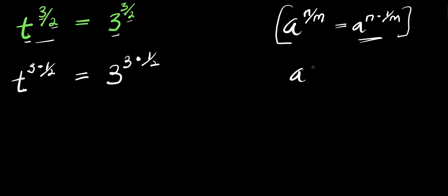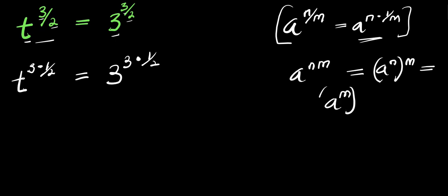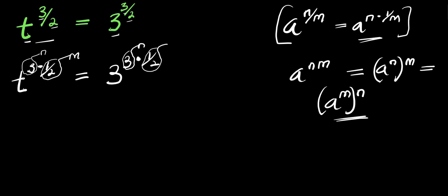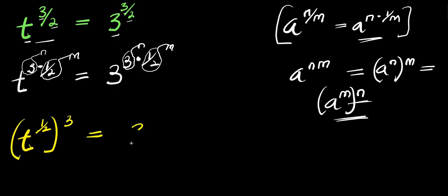Remember if you have a to the power of n times m, this equals a to the power of n raised to the power of m, and we can switch the powers. We apply this identity here — the m now comes inside the bracket. We have t to the power of 1 over 2 raised to the power of 3, and this equals 3 to the power of 1 over 2 raised to the power of 3.